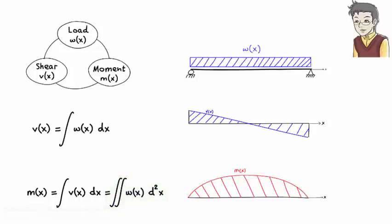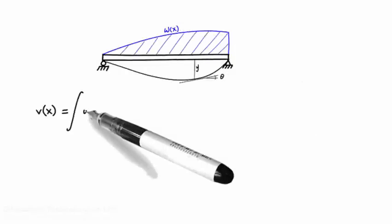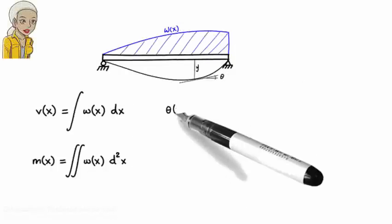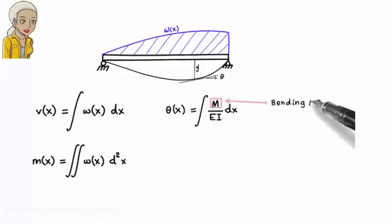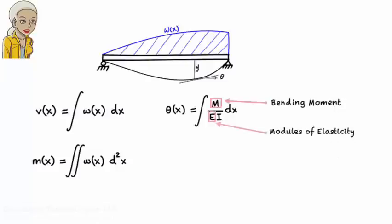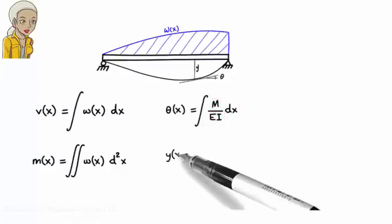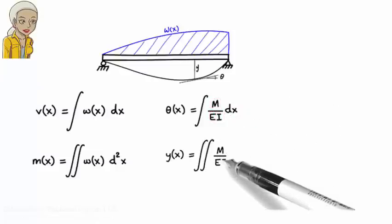But what does all this have to do with calculating deflection? We're going to use the relationship between load, shear, and moment as a template for calculating slope and deflection. Slope in a beam can be defined as the integral of M over EI, where M is bending moment, E is modulus of elasticity, and I is moment of inertia. And deflection is defined as the integral of slope, or the double integral of M over EI.